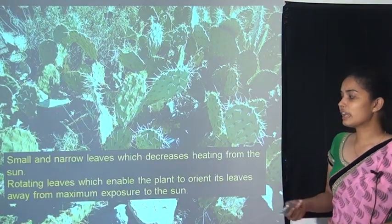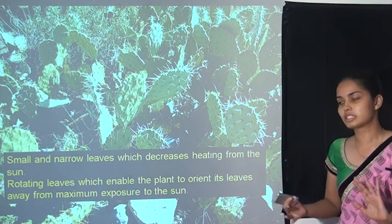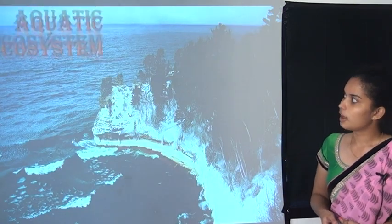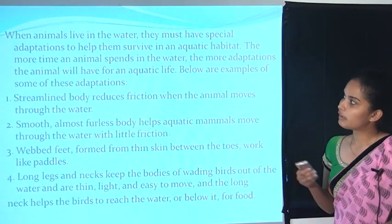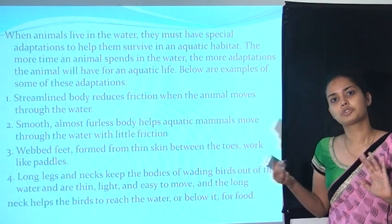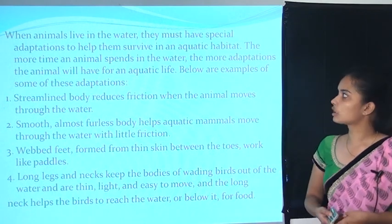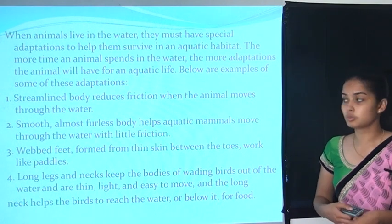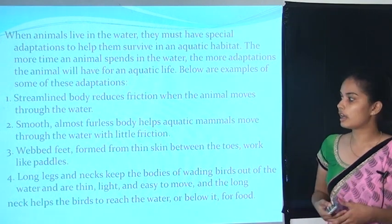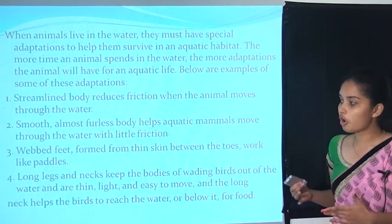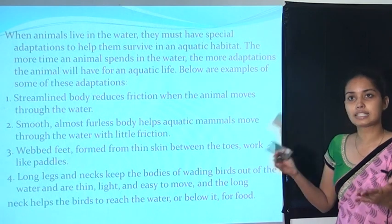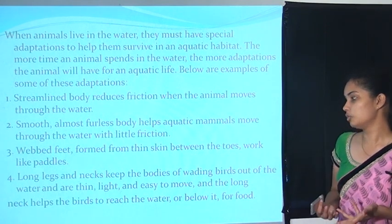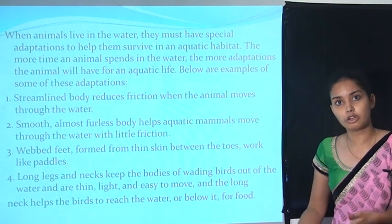Small and narrow leaves decrease heating from the sun, and rotating leaves enable the plant to orient away from maximum sun exposure. In the aquatic ecosystem, when animals live in water they must have special adaptations. The more time an animal spends in water, the more adaptations it will have. These include: streamlined body to reduce friction, smooth mostly furless skin, webbed feet for swimming, and long legs and necks in aquatic birds that keep their bodies out of the water while allowing them to reach food.